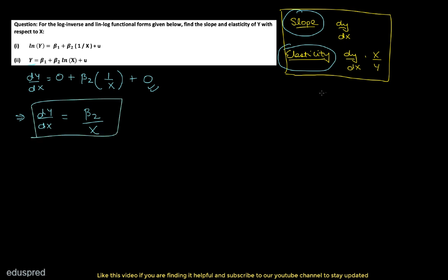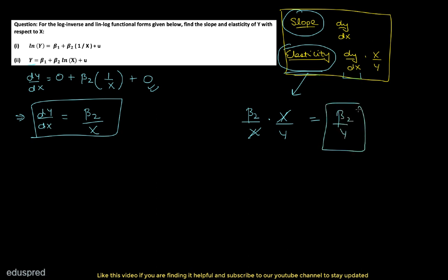Now we find the elasticity. Elasticity is slope multiplied by x/y, so the elasticity = (β₂/x) × (x/y). The x's cancel, giving elasticity = β₂/y. So for the second model, the slope is β₂/x and the elasticity is β₂/y. And that's it for this question.